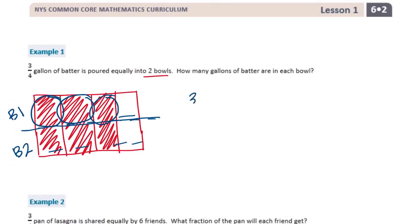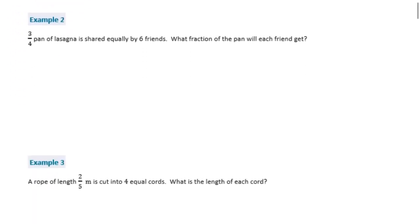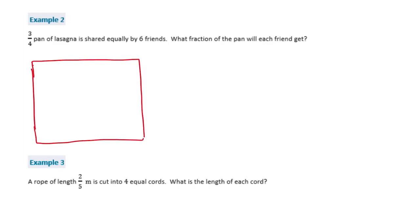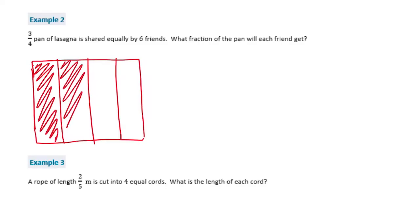There are 3/8 gallons in each bowl. Example 2: 3/4 pan of lasagna is shared equally by 6 friends. What fraction of the pan will each friend get? I'm going to do the same thing — start out with 3/4: 1/4, 2/4, 3/4. Now it's shared equally by 6 friends, so I'm going to split that into 6.